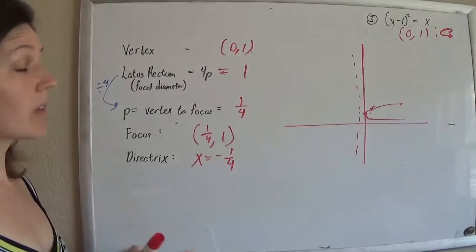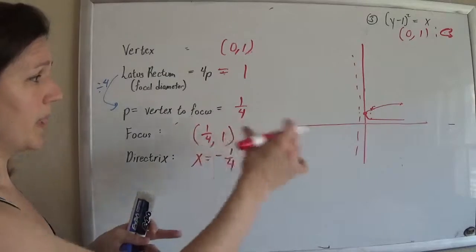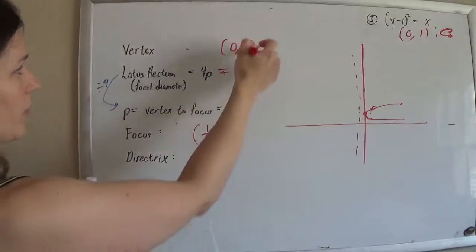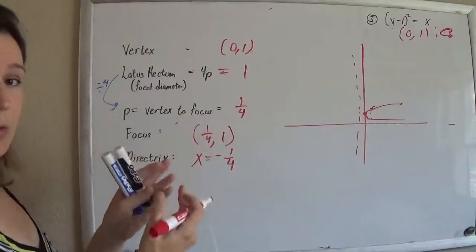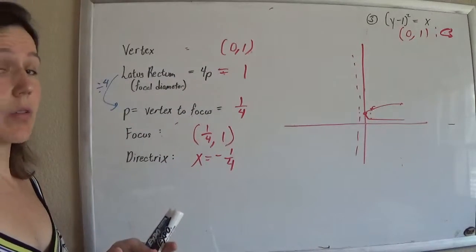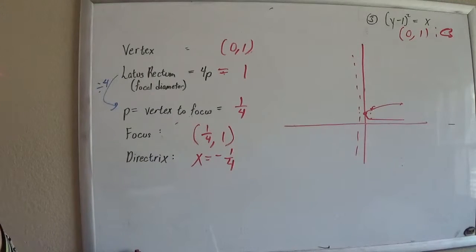And then the directrix ended up, that's an x equals negative 1 fourth. So pictures worth a thousand words. Even when the numbers get kind of gnarly, being able to picture what was happening and kind of what was happening to the vertex. And you'll see that you're just kind of adding and subtracting things from the vertex, just like shifting a normal graph. So I'll be fast, but there it is.